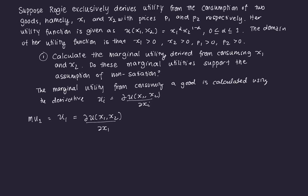To calculate marginal utility of good one, that's U1, which equals the partial derivative of the utility function with respect to X1. Intuitively, this is the change in utility if we increase good one's quantity, holding X2 constant. Deriving X1^α · X2^(1−α) with respect to X1 using the power rule, we bring down α: so MU1 = α · X1^(α−1) · X2^(1−α). That's the marginal utility of good one.